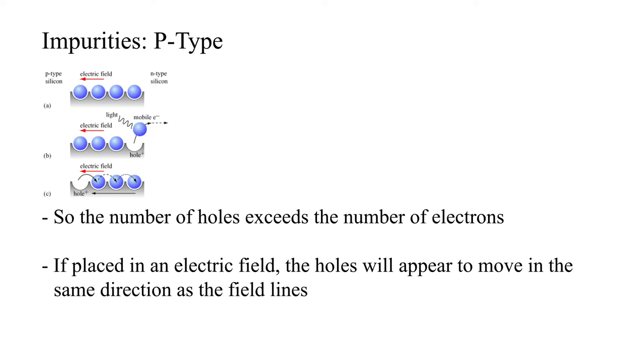If placed in an electric field, the holes will appear to move in the same direction as the field lines. These types of semiconductors are referred to as p-type semiconductors, where the p stands for positive. Similar to n-type semiconductors, the conductivity will increase with an increased number of impurities.